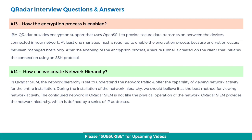Next, how can we create a network hierarchy? In QRadar SIEM, the network hierarchy is set to understand network traffic and offer the capability of viewing network activity for the entire installation. During the installation of the network hierarchy, it should be configured as the best method for viewing network activity. The configured network in QRadar SIEM is not like the physical operation of the network. QRadar SIEM provides a network hierarchy defined by a series of IP addresses.